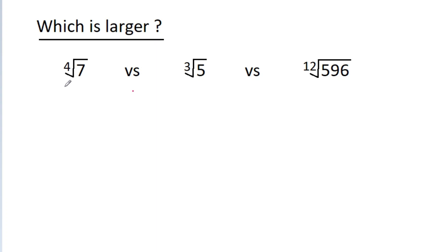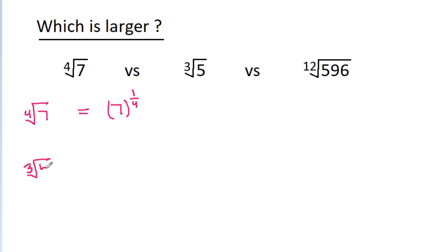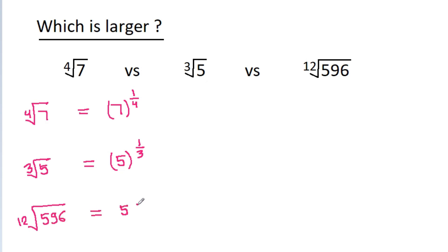In this video, we have to compare the 4th root of 7, the cube root of 5, and the 12th root of 596. We have 4th root of 7, which is 7 to the power 1 by 4, and cube root of 5, that is equal to 5 to the power 1 by 3, and 12th root of 596, that is equal to 596 to the power 1 by 12.